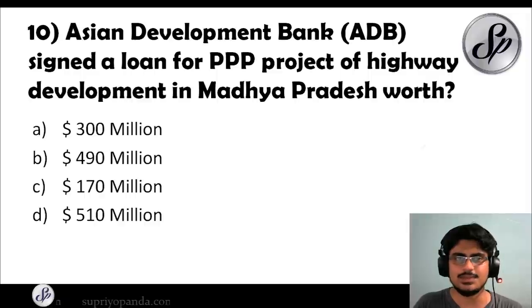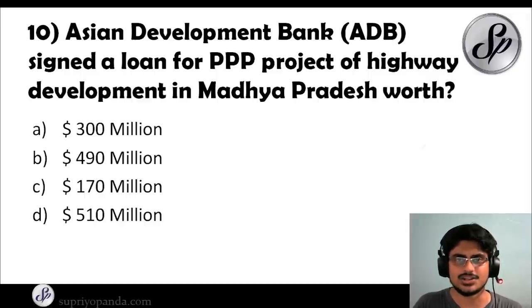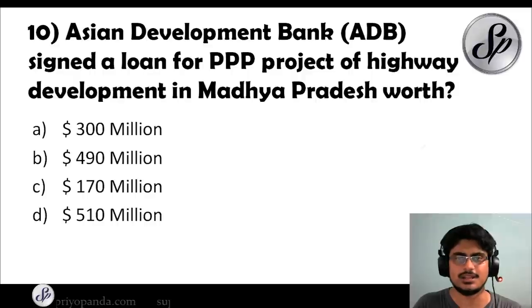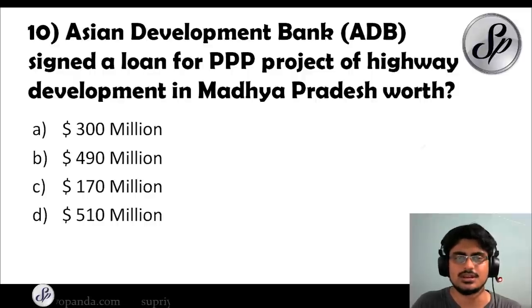Question ten: the Asian Development Bank (ADB) signed a loan for a public-private partnership project of highway development in Madhya Pradesh. Worth how much? The answer is $490 million.